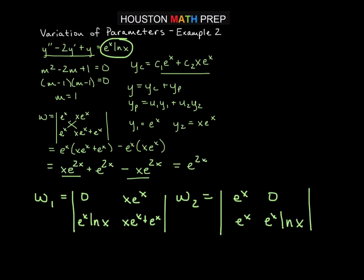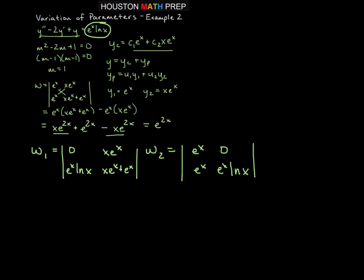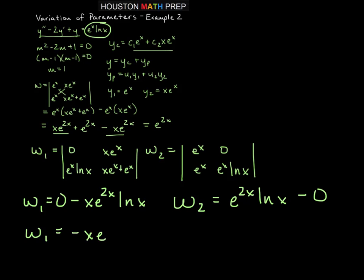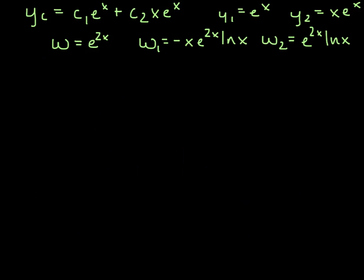W2, we put 0 and g of x in for the second column. So 0, e to the x ln x, we wouldn't touch the original first column we had, which was e to the x and e to the x. So now we work these determinants here. So w1 is going to equal 0 minus x e to the 2x ln x when we do that determinant. W2 is going to equal e to the 2x ln x minus 0.